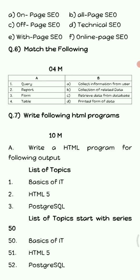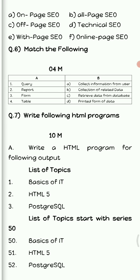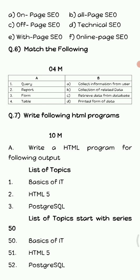Now we are going to see match the pairs. First is query — query is always used to retrieve the data from the database, so query's answer is option C. Second is report — report is nothing but data in a printed form, so the answer is option D: printed form of data. Third is form — form is always used to collect the information from the user, so the answer is option A. Last is table — table is used to store related data.